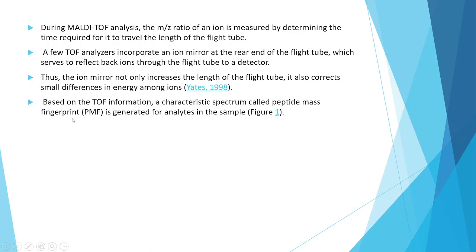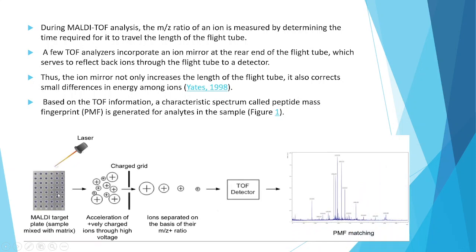Based on the TOF information, a characteristic spectrum called the peptide mass fingerprint is generated for analytes in the sample. In the figure, the MALDI target plate has sample mixed with matrix, which is bombarded with laser. A variety of ions are generated, accelerated as positively charged ions through high voltage, and separated on the basis of their m/z ratio. The TOF detector gives the mass spectra, which is matched with the standard spectra.